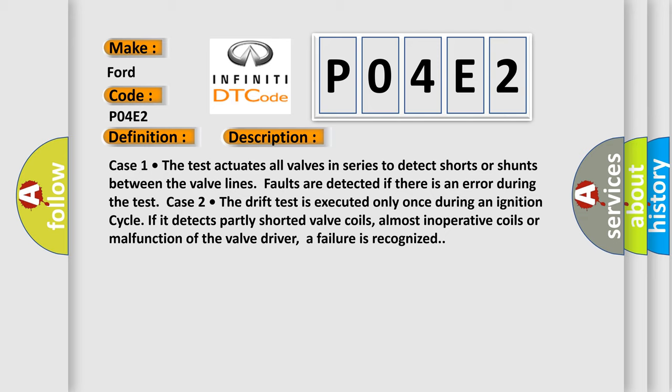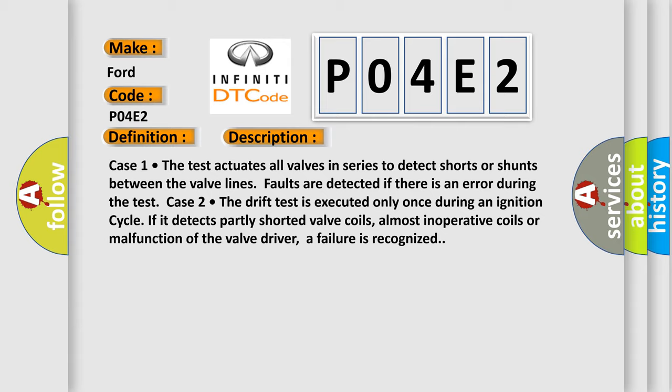Case 2: The drift test is executed only once during an ignition cycle. If it detects partly shorted valve coils, almost inoperative coils, or malfunction of the valve driver, a failure is recognized. This diagnostic error occurs most often in these cases.